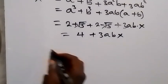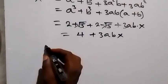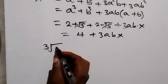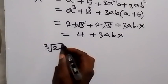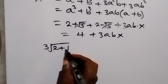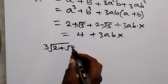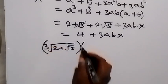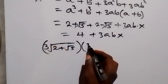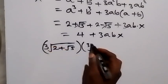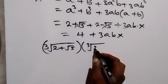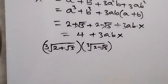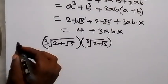Since a is the cube root of (2 + √5) and b is the cube root of (2 − √5), ab is the cube root of (2 + √5) times the cube root of (2 − √5).